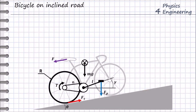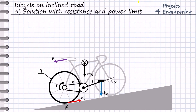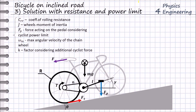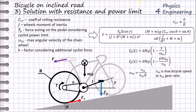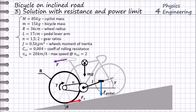We now go to the third method, with consideration of resistances and a power limit. We include the following boundaries: coefficient of rolling resistance, wheel moment of inertia, and we set the limit of the maximum rotational speed of the pedals that the cyclist can generate. Omega M is defined by the maximum velocity of the bike on a certain gear. We use the following values for all parameters, including the wheels' moments of inertia, the coefficient of rolling resistance, and we consider that the cyclist can run at 20 kph on the second gear.